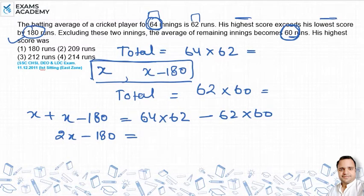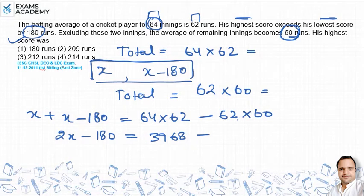यह बराबर हो जाएगा 64 times 62, that is equal to 3968. 62 times 60 करेंगे तो वो value हो जाएगी 3720.